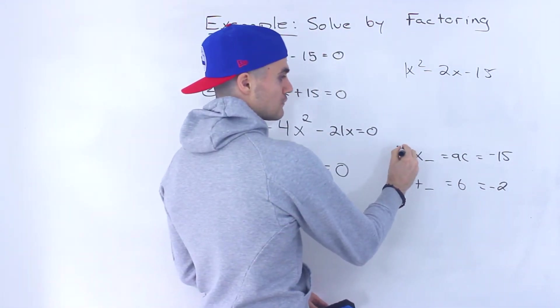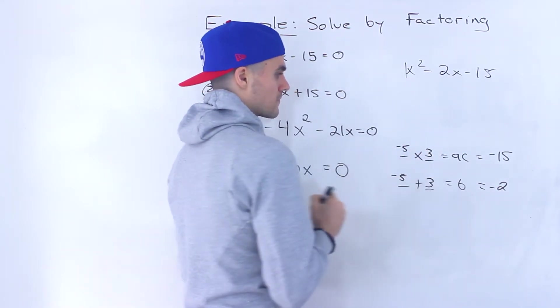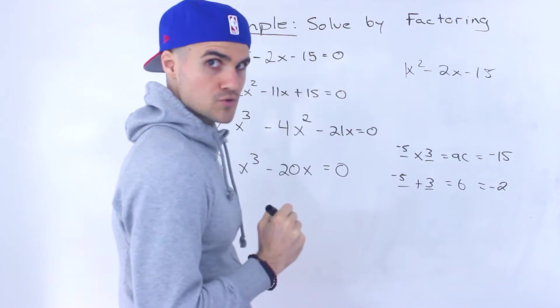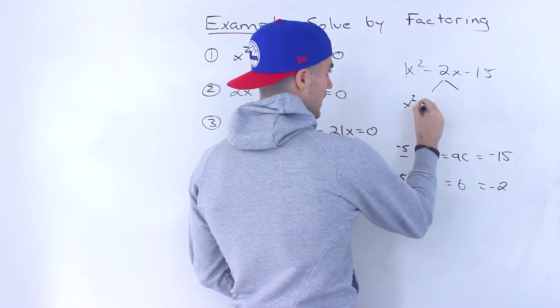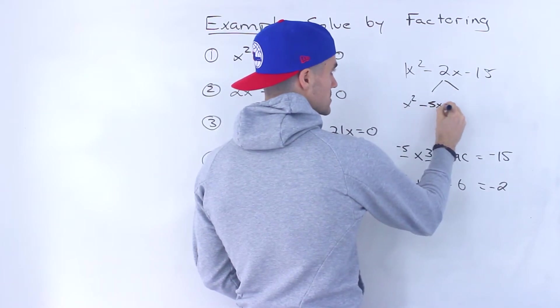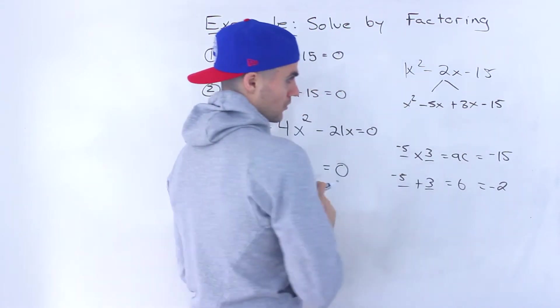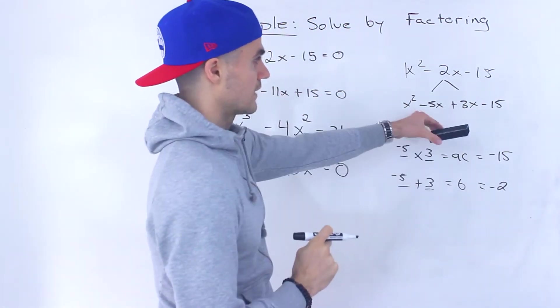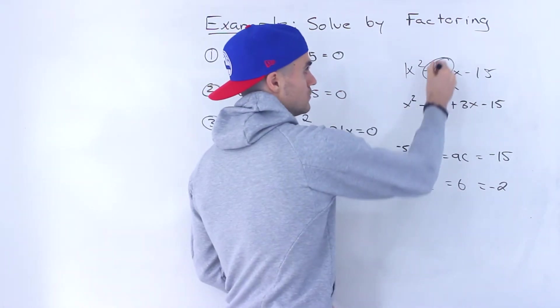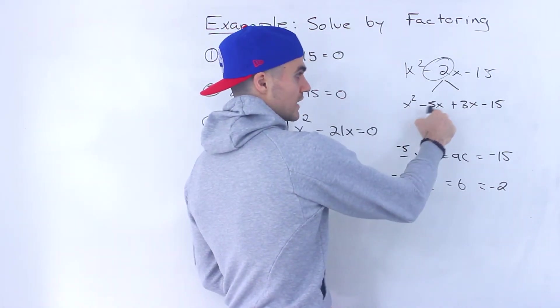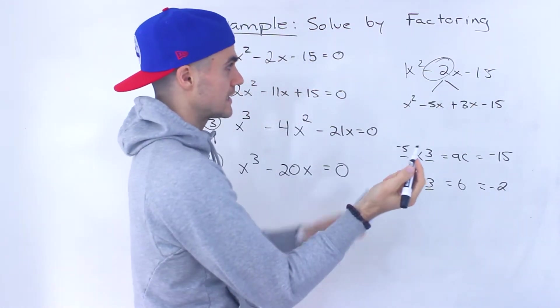That would be -5 and +3. Both of those work. So we decompose that middle value to x² - 5x + 3x - 15. Doesn't matter which order you go in. I put the -5x first, but you could have put +3x - 5x. The point is we took this -2x and decomposed it to -5x + 3x. Notice -5x + 3x does give us -2x.